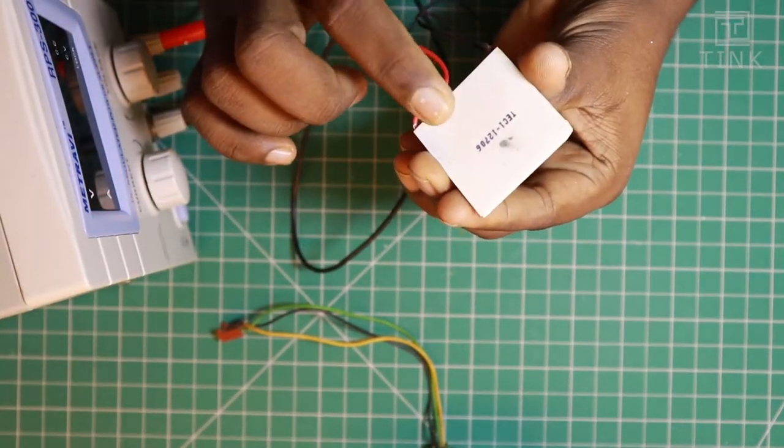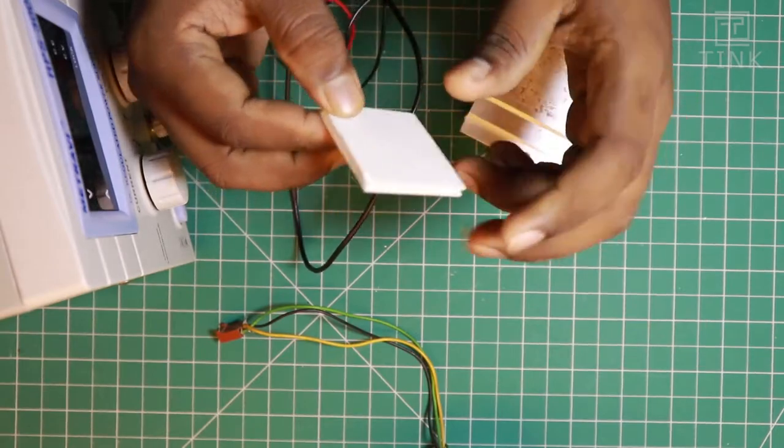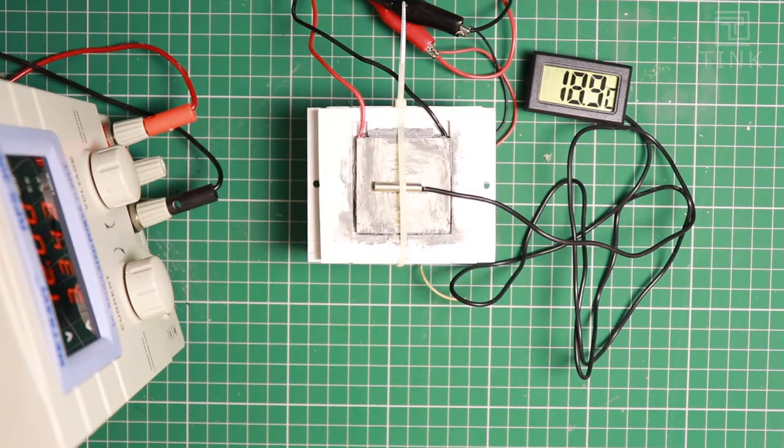This is the Peltier module. When a voltage is applied in these wires, one side of the Peltier module gets super hot and the other side gets super cold.